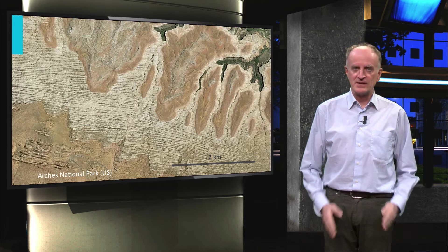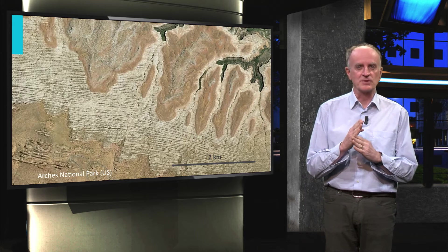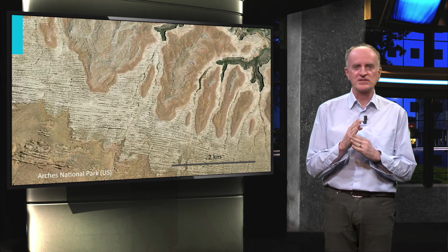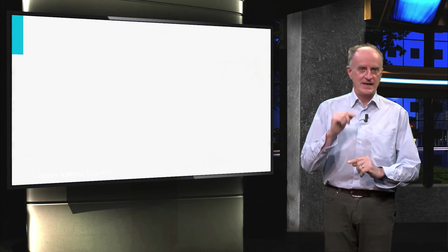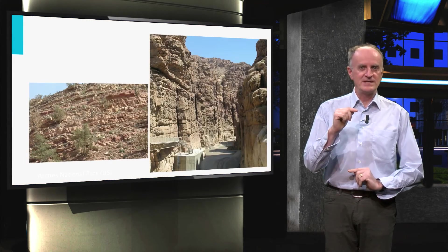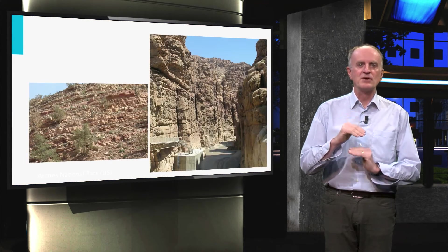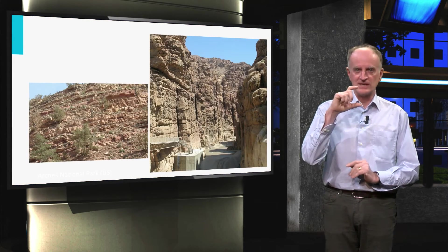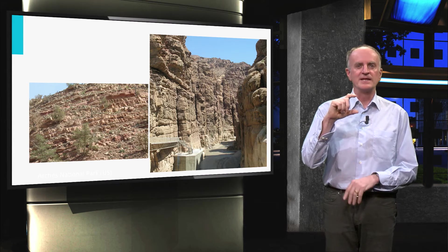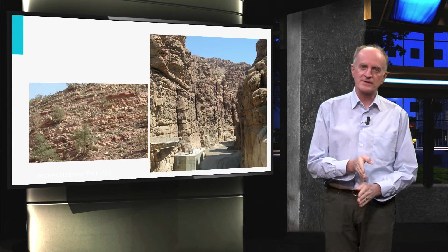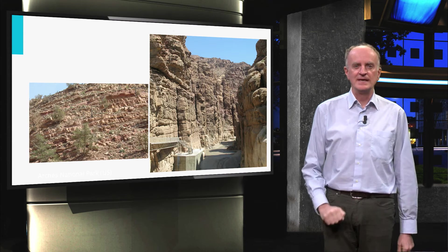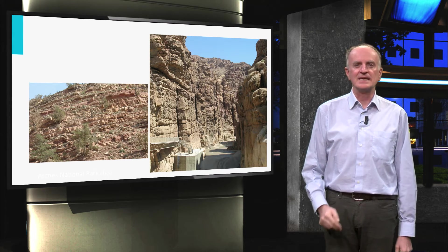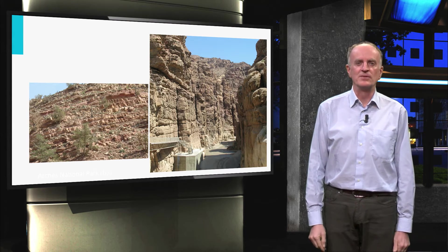In this case, they form networks, with fractures cross-cutting each other. In the vertical dimension, they can be confined to single sedimentary layers, like in the left picture, or traverse large parts of the sedimentary succession, as is the case for the rocks on the right.